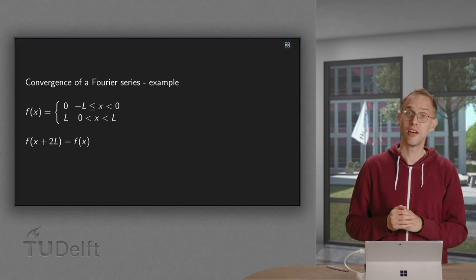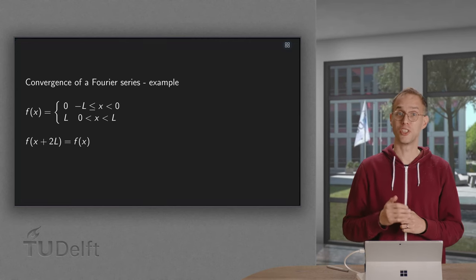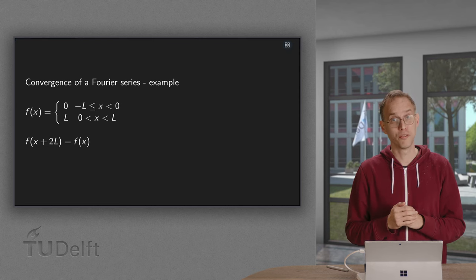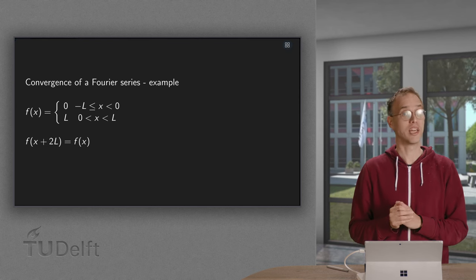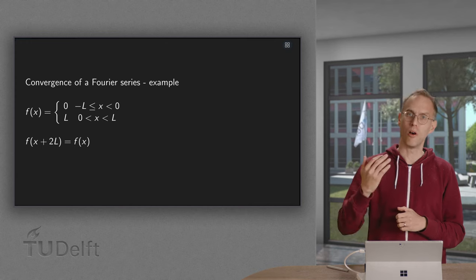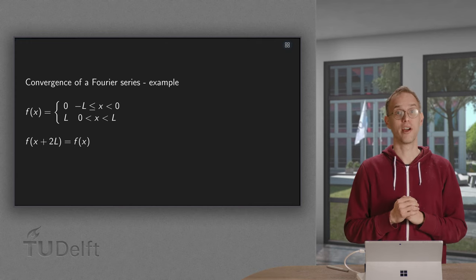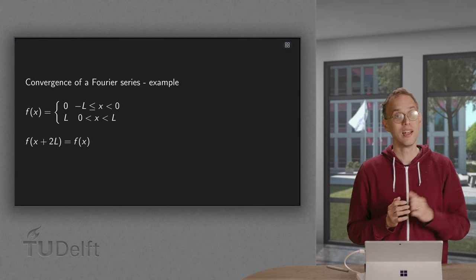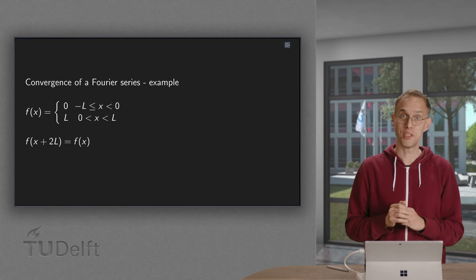The theorem of Fourier tells us that our Fourier series converges nicely to our original function f of x as long as f is continuous. On jump discontinuities, however, something else happens. Let us see how this looks in an explicit example.